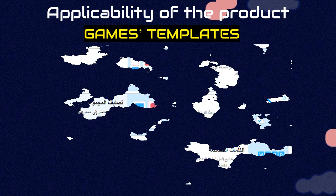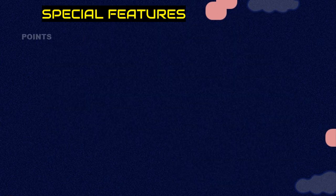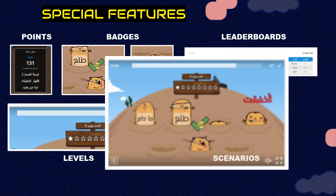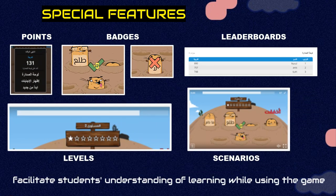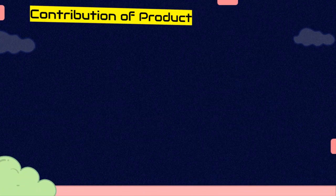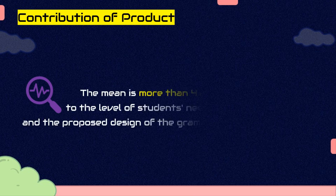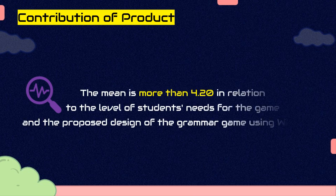Regarding the applicability of the product, there are various game templates provided by Word Wall. The games contain various features such as points, badges, leaderboards, levels, and scenarios. These features are used to facilitate students' understanding while using the games. The results showed that the mean is more than 4.20 in relation to students' needs for the game and the proposed design of the grammar game using Word Wall.